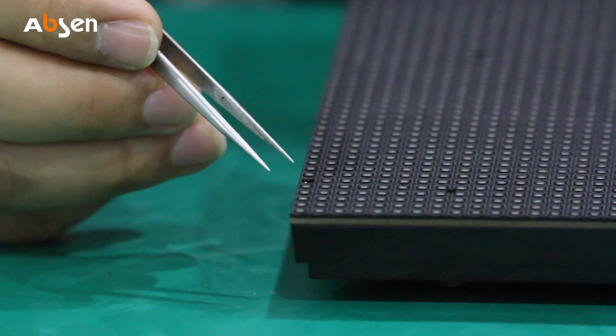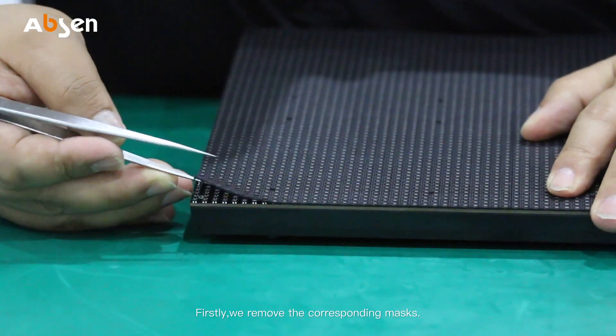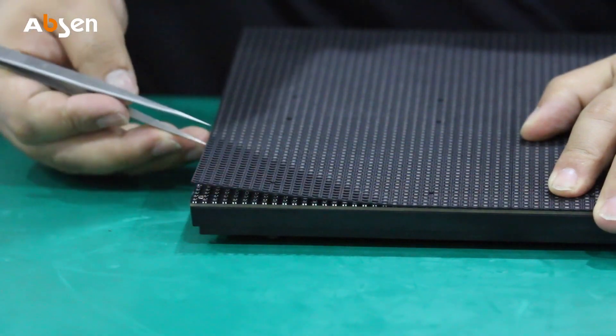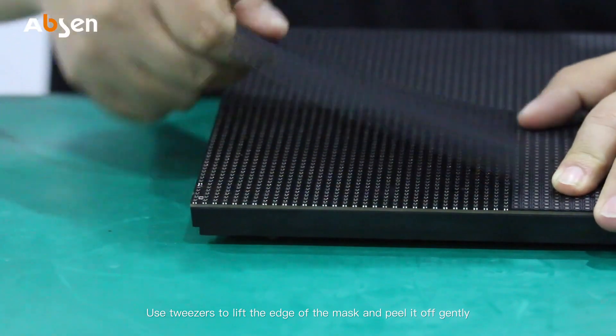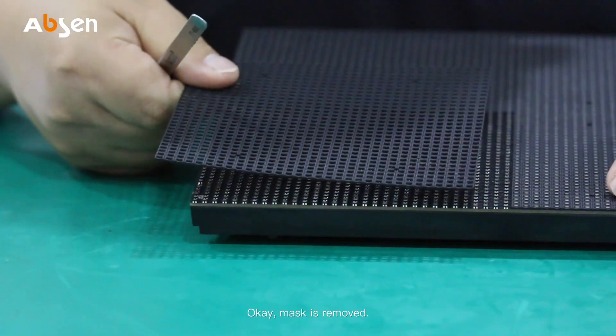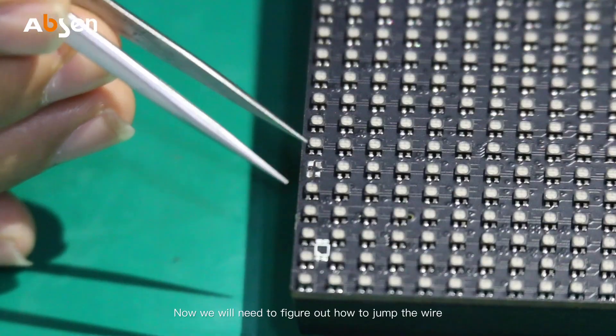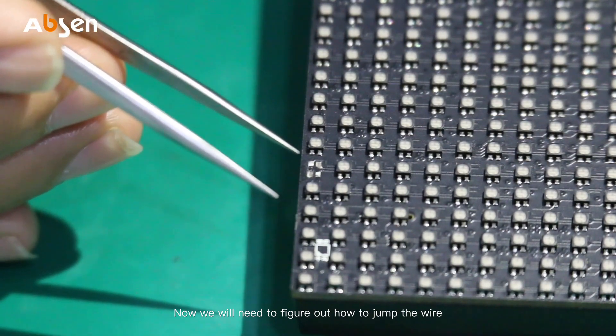Now we see there is a pixel missing at the edge of the module. Firstly we remove the corresponding mask. Use tweezers to lift the edge of the mask and peel off it gently. Okay, mask is removed.